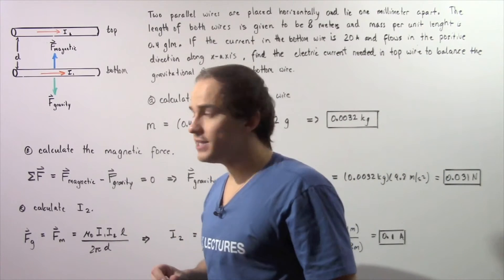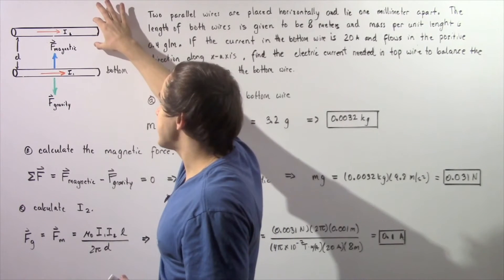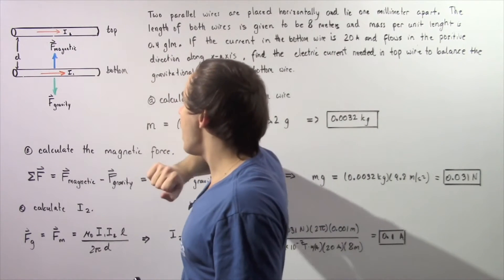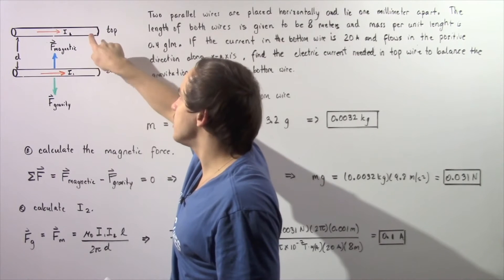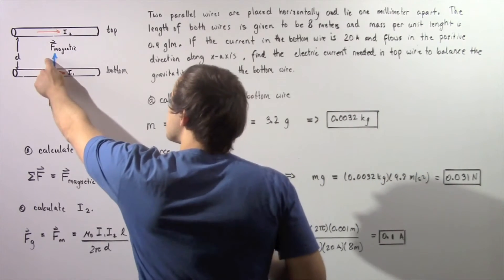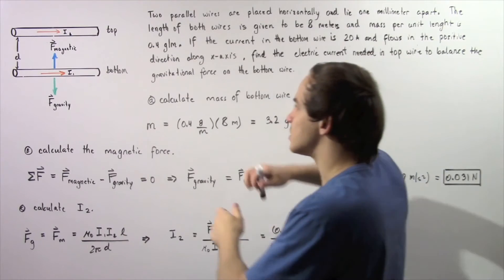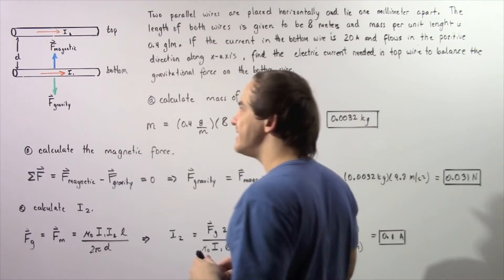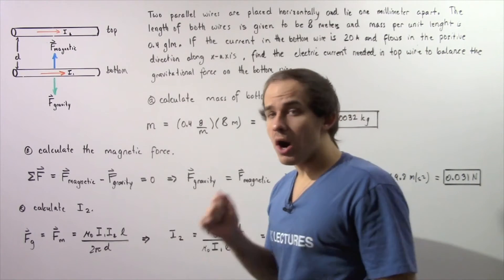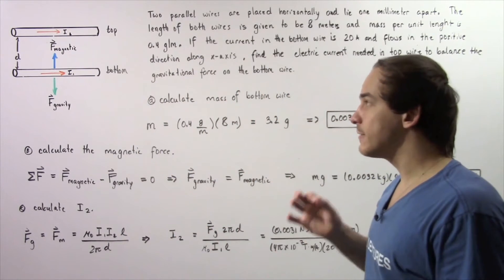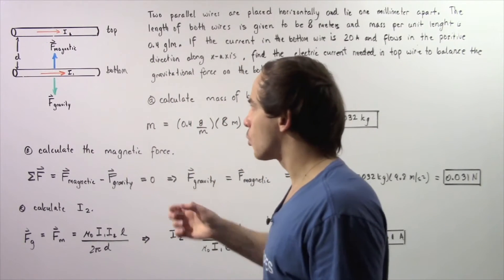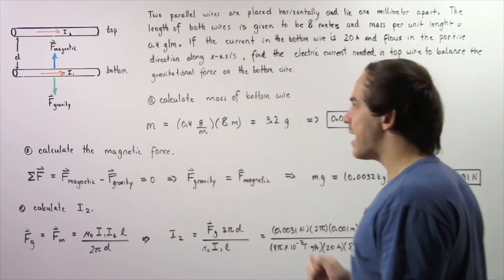Using the right hand rule, as a result of this electric current there will be a magnetic force that will act on the bottom wire as a result of the magnetic field produced by the electric current in the top wire. The direction of this magnetic force will point in a positive direction along the y-axis. So these two forces will point in opposite directions, and we essentially want to calculate the quantity of I2 that will create a magnetic force that will exactly balance out the gravitational force — in other words, these two forces should have the same exact magnitude.